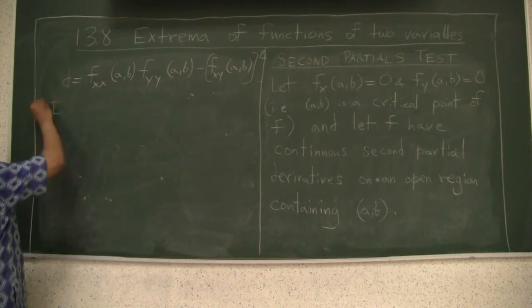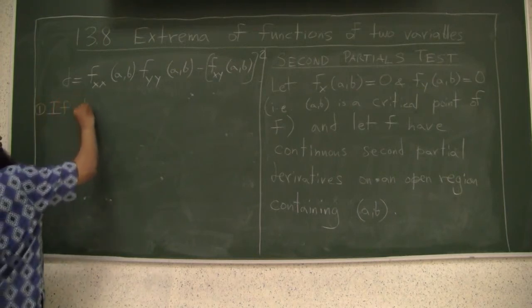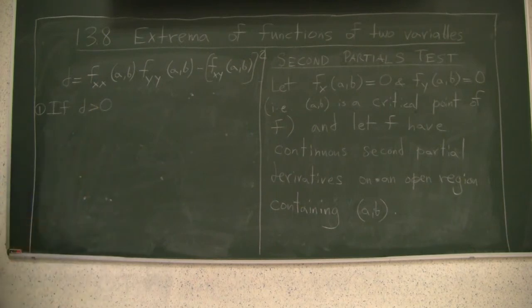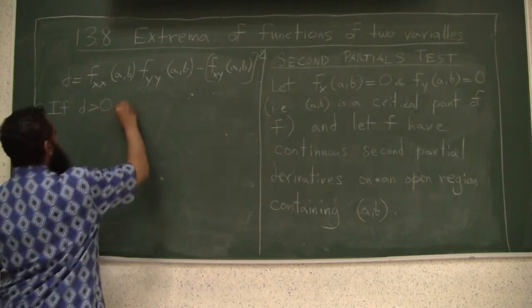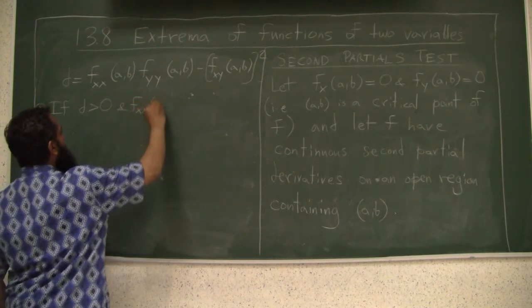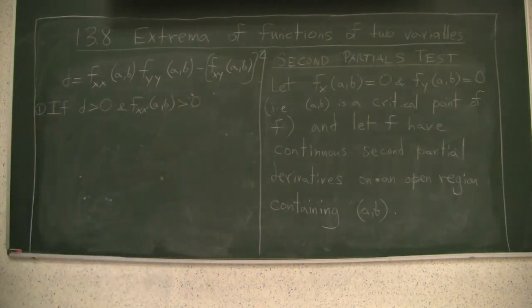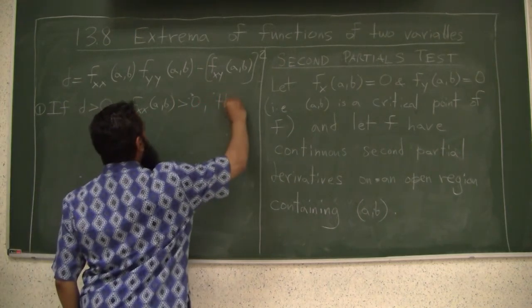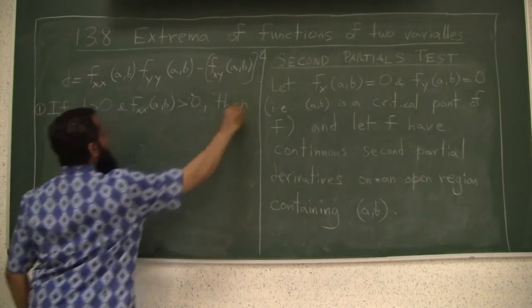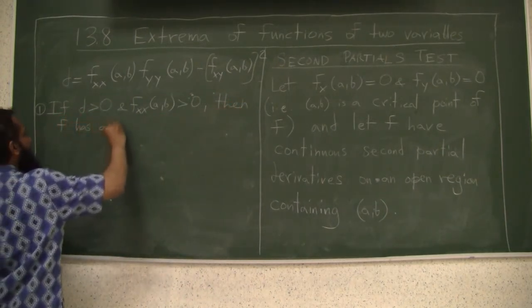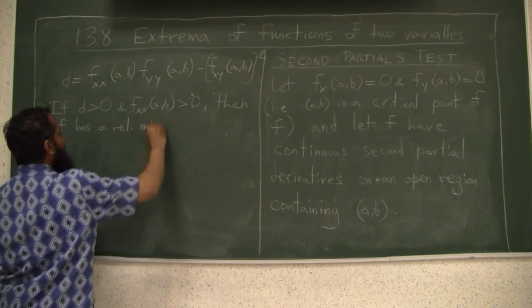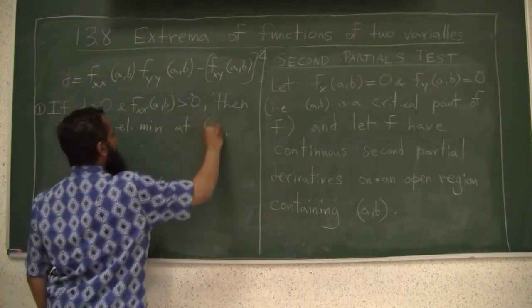So here's the work that this says. Number one, if d is bigger than 0, and f_xx(a,b) is bigger than 0, then f has a relative minimum at (a,b).